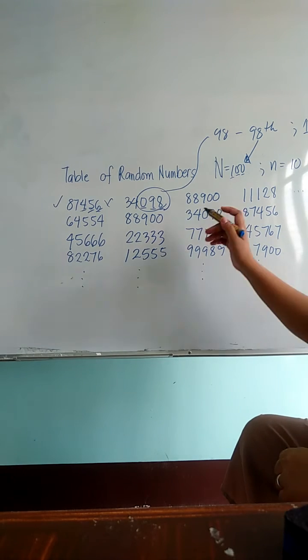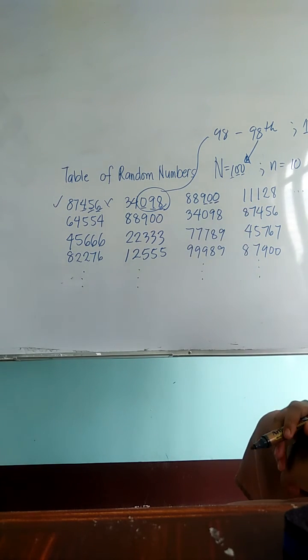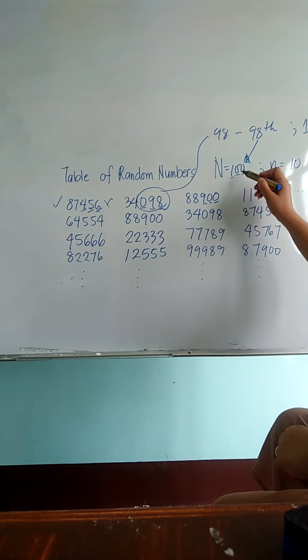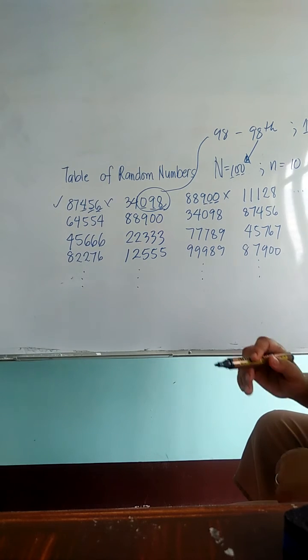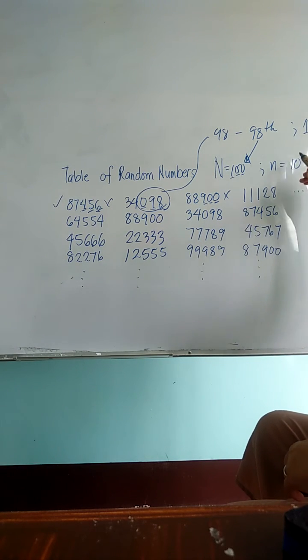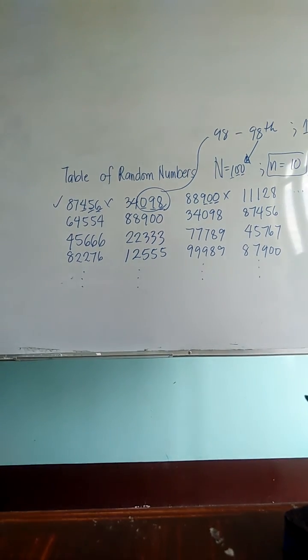Okay, so next is 88900. The last 3 digits is 900, which is beyond 100. Therefore, this will not be part of your sample. You do the same process until you reach 10. That's your sample size.